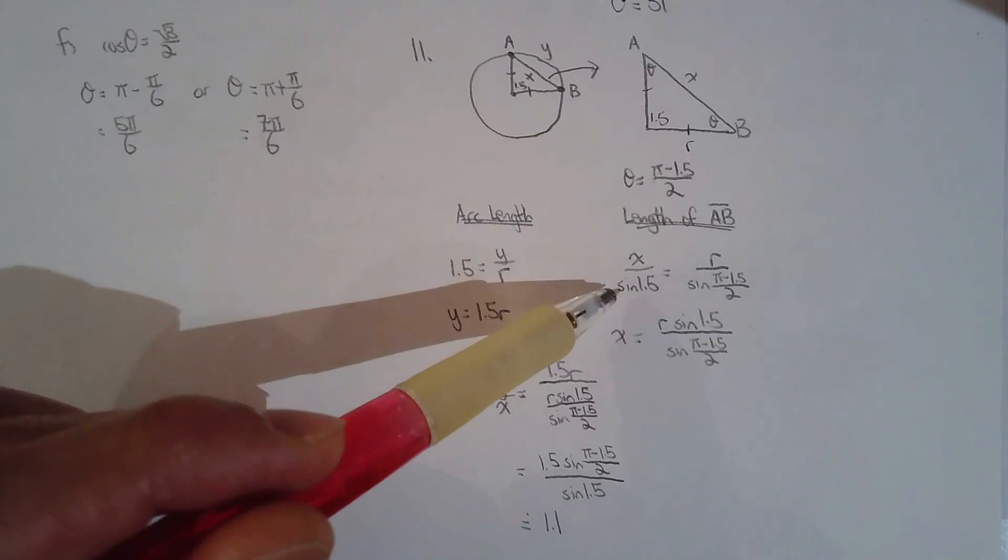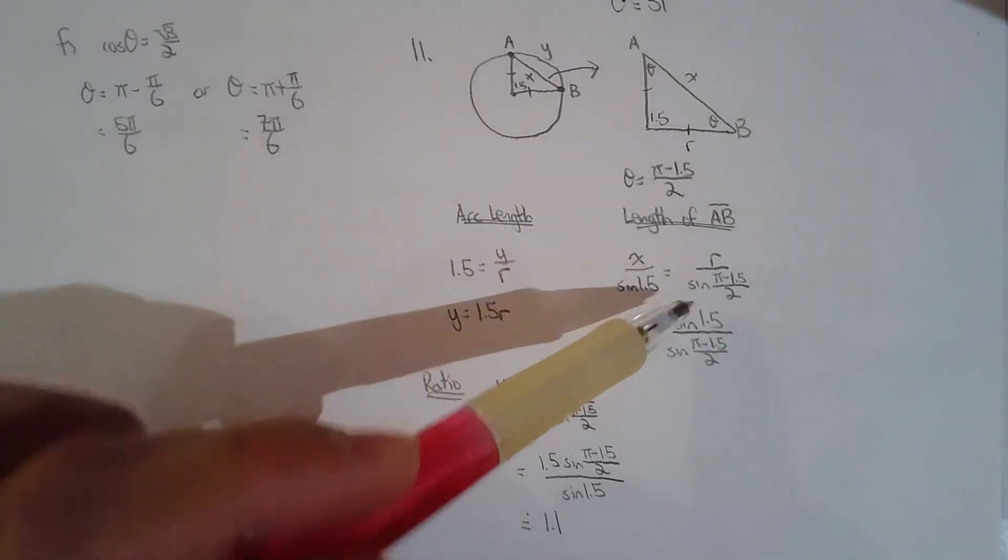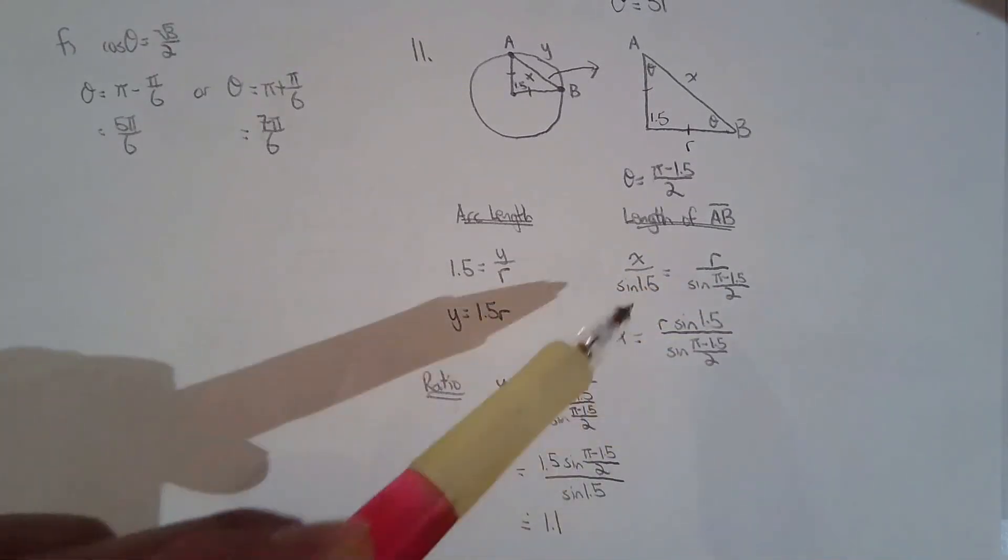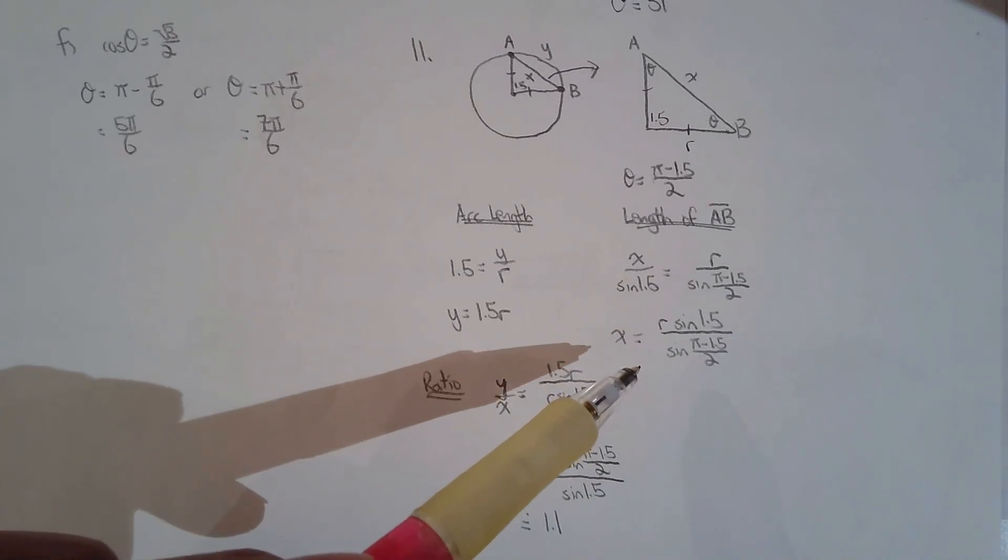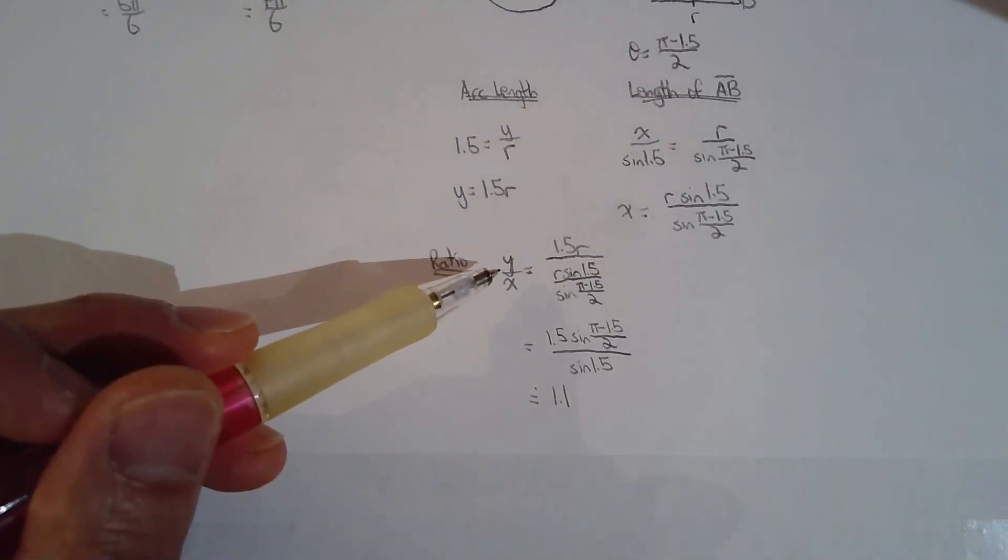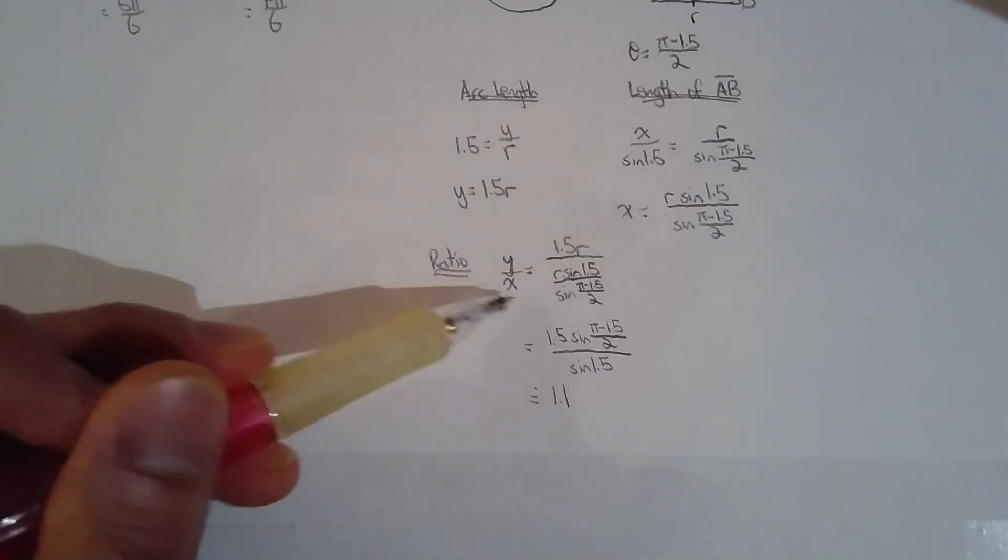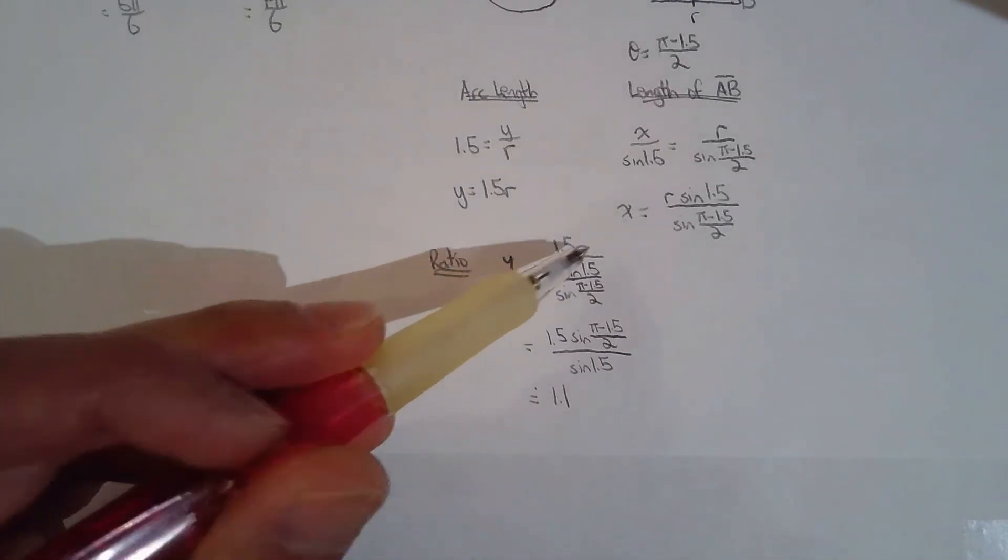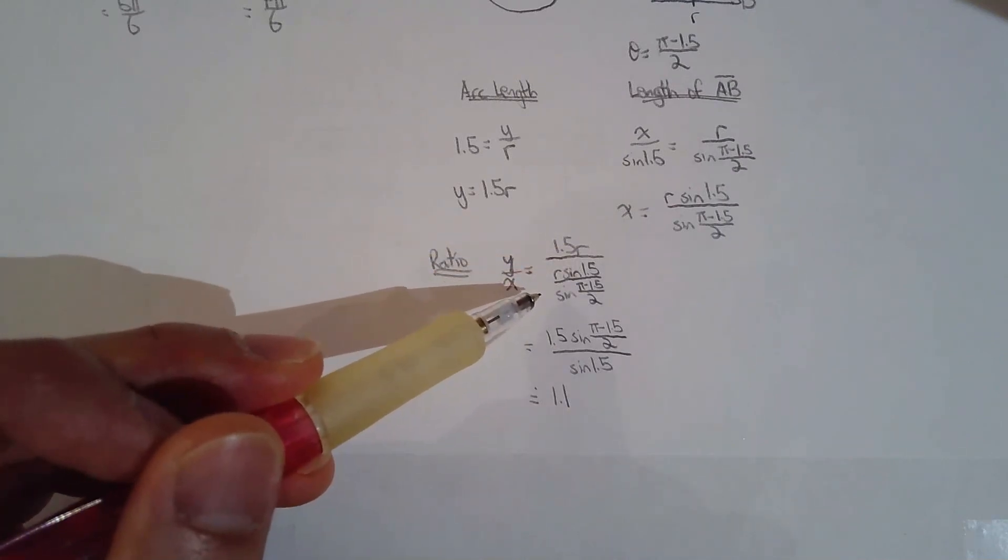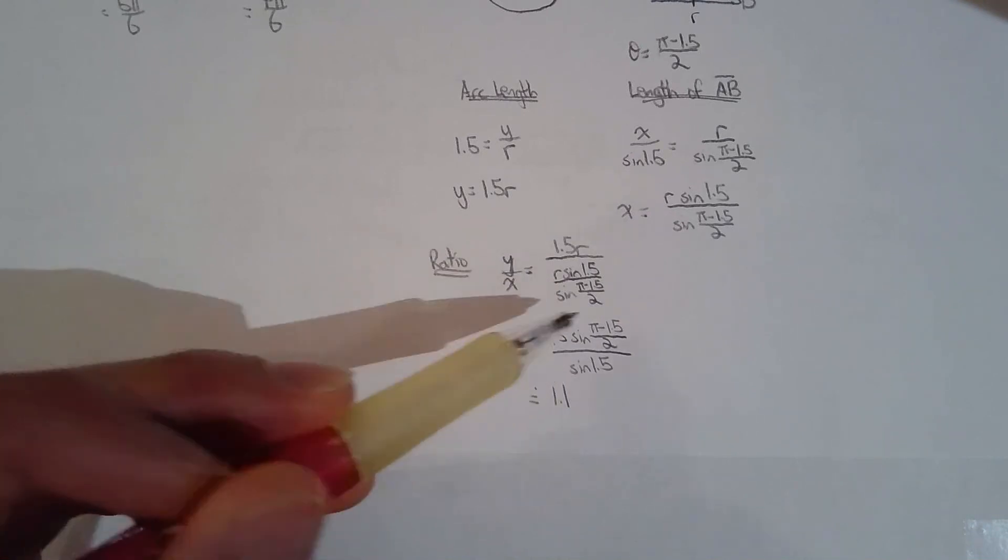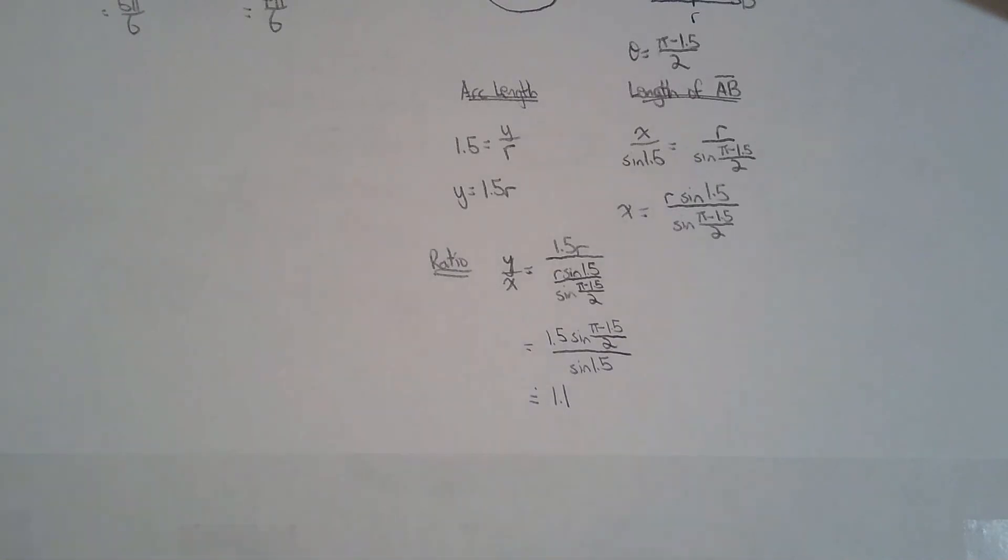So x/sin(1.5) = r/sin((π - 1.5)/2). Solve for the line segment AB which I've denoted as x, and then we can solve for the ratio y/x, arc length to the length of the line segment. I know it looks a little chunky but the radius cancels each other out actually, so the radius of the circle is irrelevant to the ratio, which is beautiful. And then just basic math and get 1.1. So hopefully that wasn't too bad.